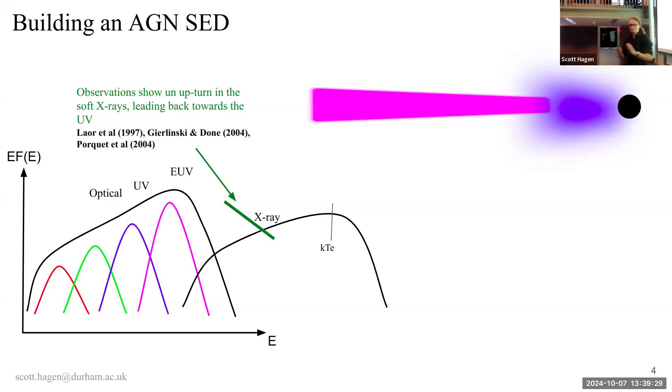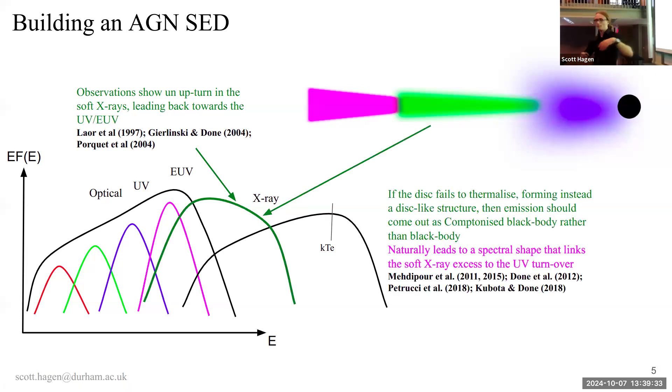One way, one of many different models, you can think about it as, maybe my disk is not this standard Shakura-Sunyaev disk that's formalized perfectly, maybe the structure is a bit different when my dissipation has moved up into the photosphere, and so emitting as this sort of nice thermal component, a Comptonized continuum, and you get a Comptonized black body, linking your EUV emission down to the X-ray, and giving you this upturn when you look in the soft X-ray bandpass.